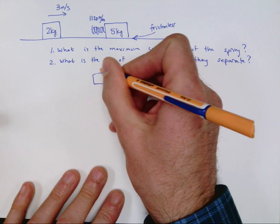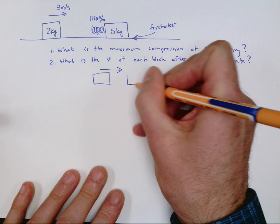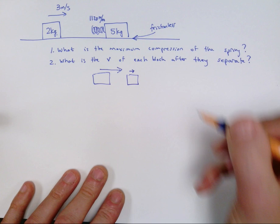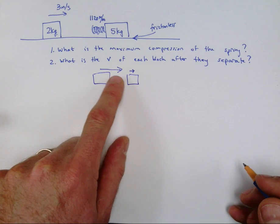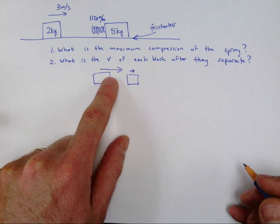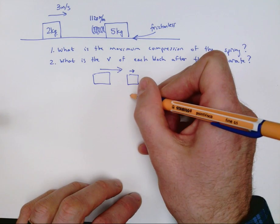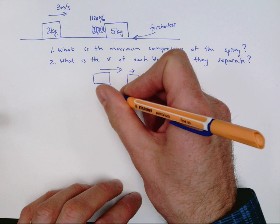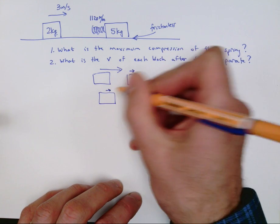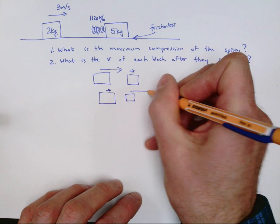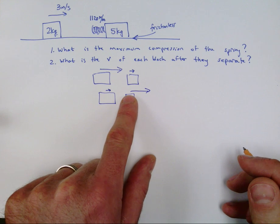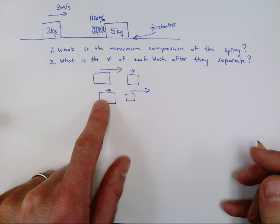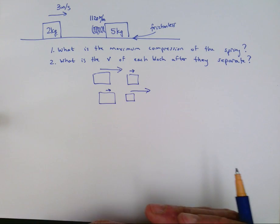If the one in the back has more speed than the one in the front, then this one is still catching up to that one and the spring is still compressing. On the other hand, if the one in the back has less speed than the one in the front, then the one in the front is moving away from the one in the back and the spring is expanding.